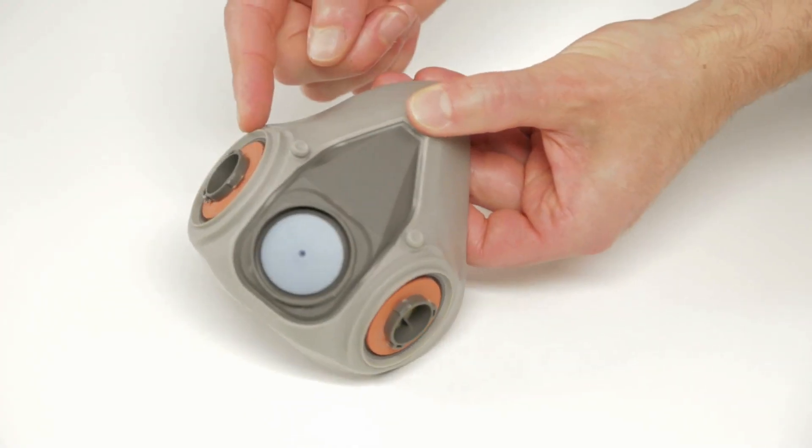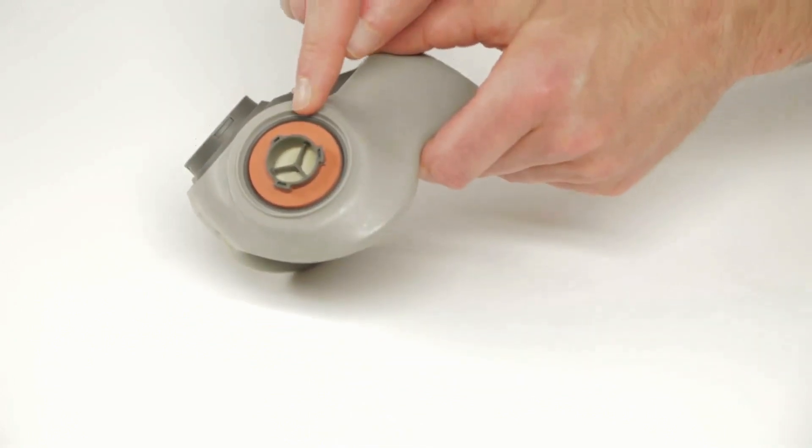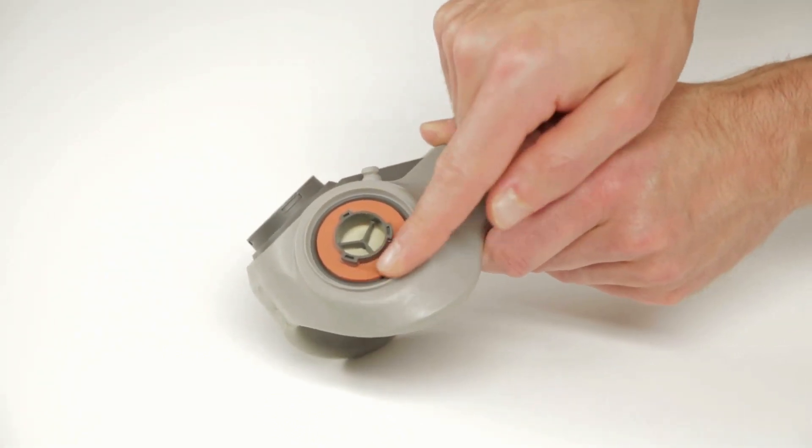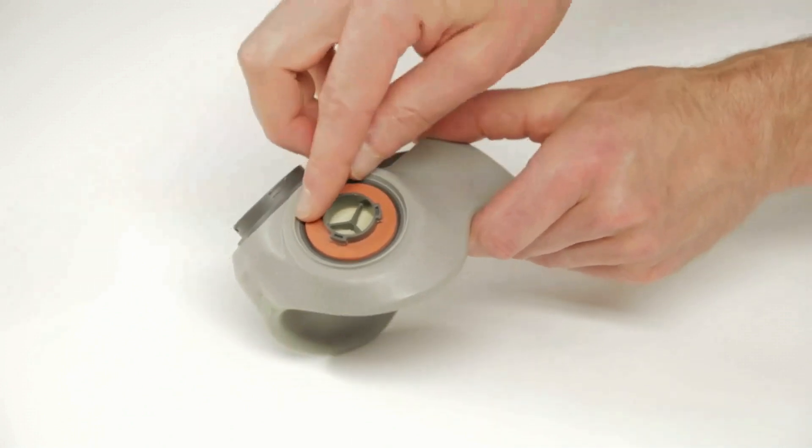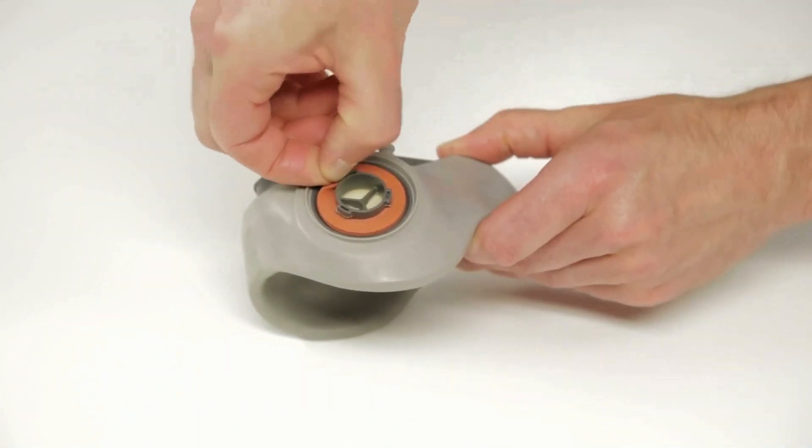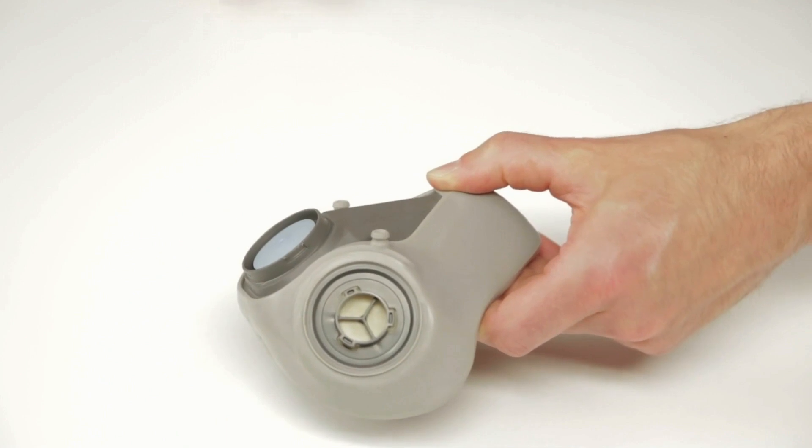The two red gaskets are designed to seal the interface between the facepiece and the filters, cartridges, or dual air line. They should be inspected before each use and replaced if lost or damaged.